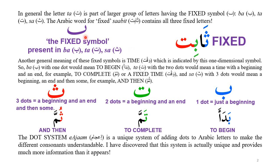This symbol, found in these three letters, is differentiated by the use of the A-jump system — the dot system of Arabic — using one, two, and three dots. As I found out, these dots are not without meaning; they have meaning.